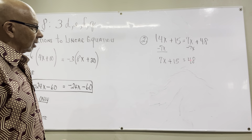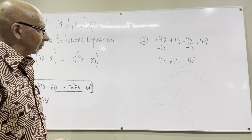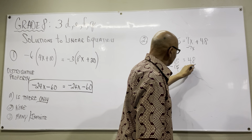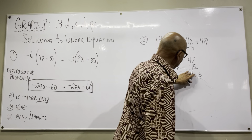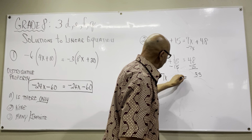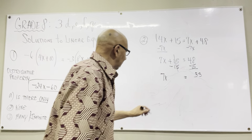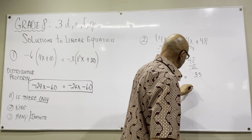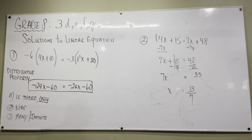Now 7x plus 15 equals 48. To get x alone, I'll subtract 15 from both sides. That cancels out the 15, leaving 7x equals 33. Now I divide both sides by 7 to get x all alone, giving me x equals 33 over 7. So here I only have one solution to this equation.